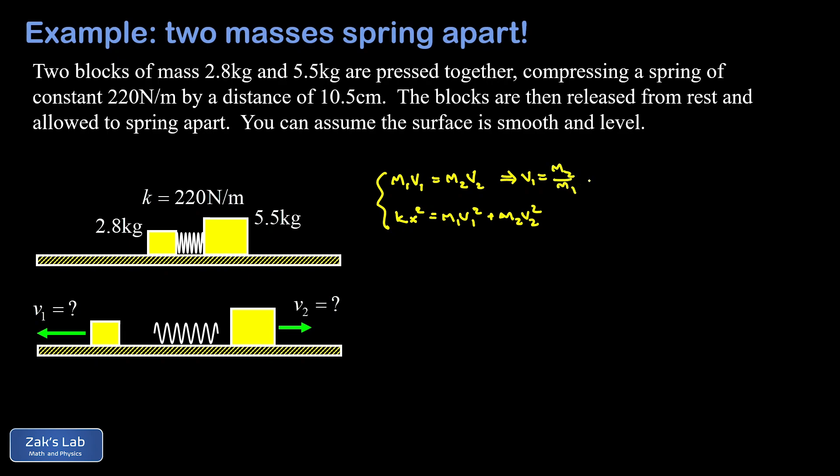Then we substitute that into the second equation. When I square v1, I get m2²/m1²·v2². Notice that one of the m1s cancels here, and also that v2² is common to both terms, so I factor that out. In my first term I have m2²/m1, and in my second term I just have m2. I'll get a common denominator by multiplying the m2 by m1/m1, which allows me to add these two fractions. I can rewrite the right side by pulling a factor of m2 out of the numerator and that whole denominator m1, writing this as (m2/m1) times (m2 + m1).